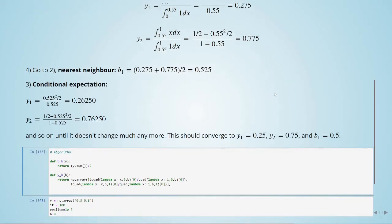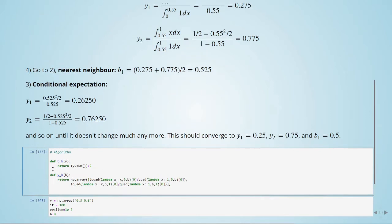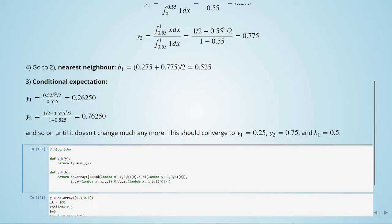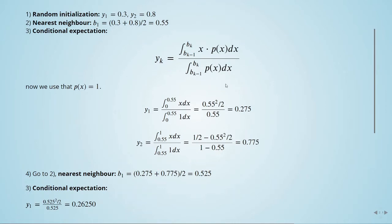So let's define here our functions for this algorithm. Here is a function to compute b of k, which is the nearest neighbor rule. We are dividing, given y, y will be an array with two numbers. So we will take the average. And we are also defining a function to calculate the y of k, which is given by this formula here.